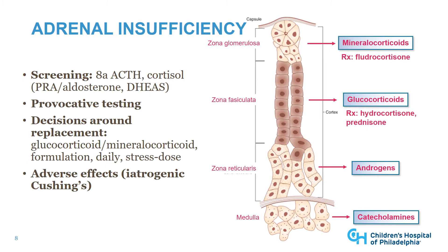Decisions around replacement of adrenal hormones depend on which deficiencies are present. For glucocorticoid deficiency, hydrocortisone and prednisone are appropriate. For mineralocorticoid deficiency, fludrocortisone is used. Our goal is to recapitulate daily hormone fluctuations and also to provide additional steroids when needed in the setting of physiologic stress. We must also be mindful of potential adverse effects of excess steroid administration, called iatrogenic Cushing's.